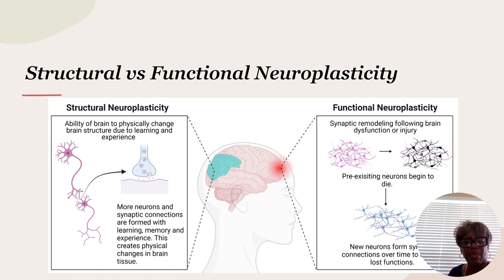This slide gives us some basic science on what happens in the brain cells as they're trying to communicate and signal each other that we need to make an adjustment, either because we've learned something new or there's been some sort of trauma or injury. Therefore, nerve cells need to respond differently.